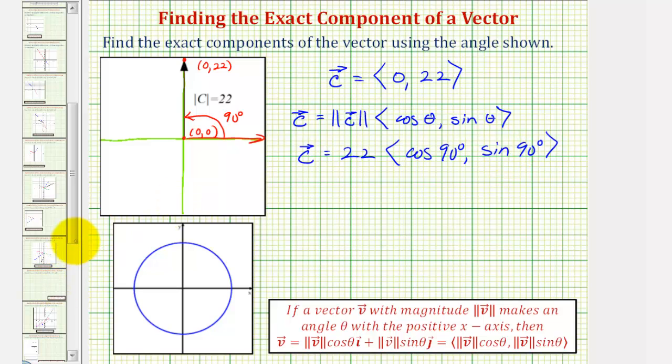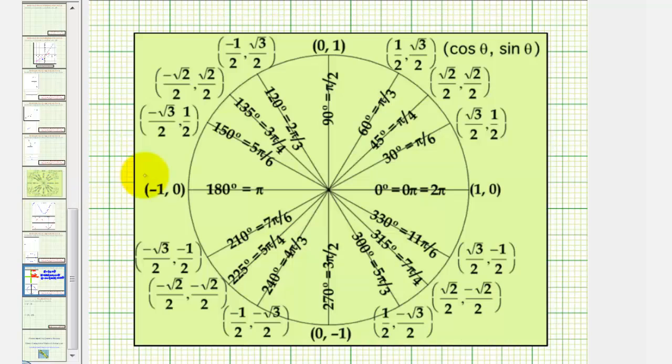If we take a look at the unit circle, remember, x is equal to cosine theta and y is equal to sine theta. Notice 90 degrees terminates here, and therefore cosine 90 degrees is equal to zero and sine 90 degrees is equal to one.